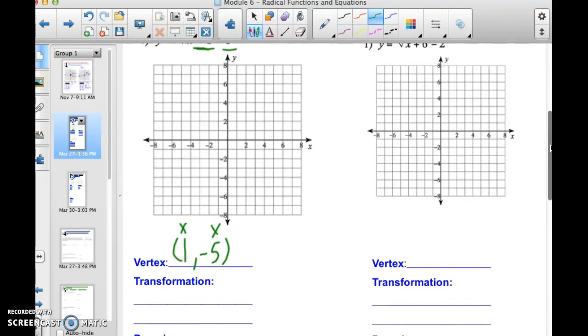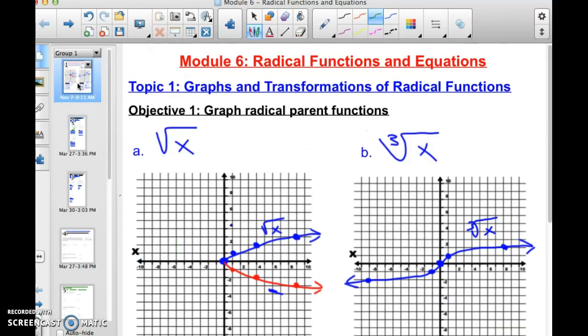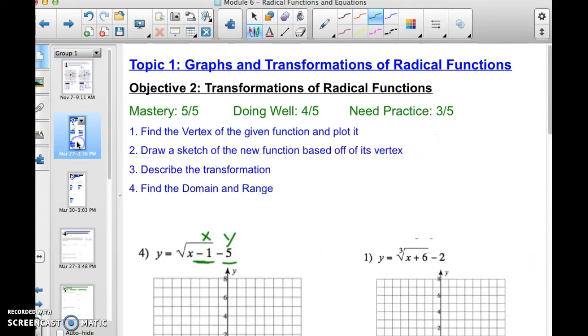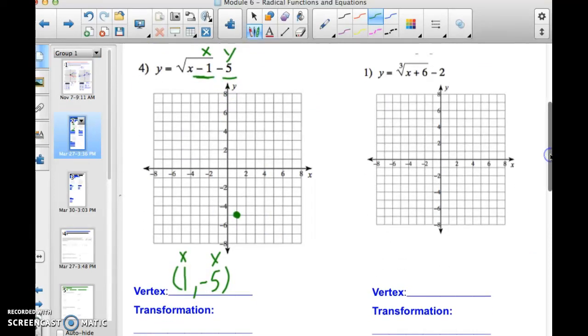I'm going to plot my vertex over one down to negative five. And if you remember from the parent function, I went over one, up one, over four, up two, over nine, up three, based off of the perfect squares. So I'm going to do the same thing. Over one, up one, over four...